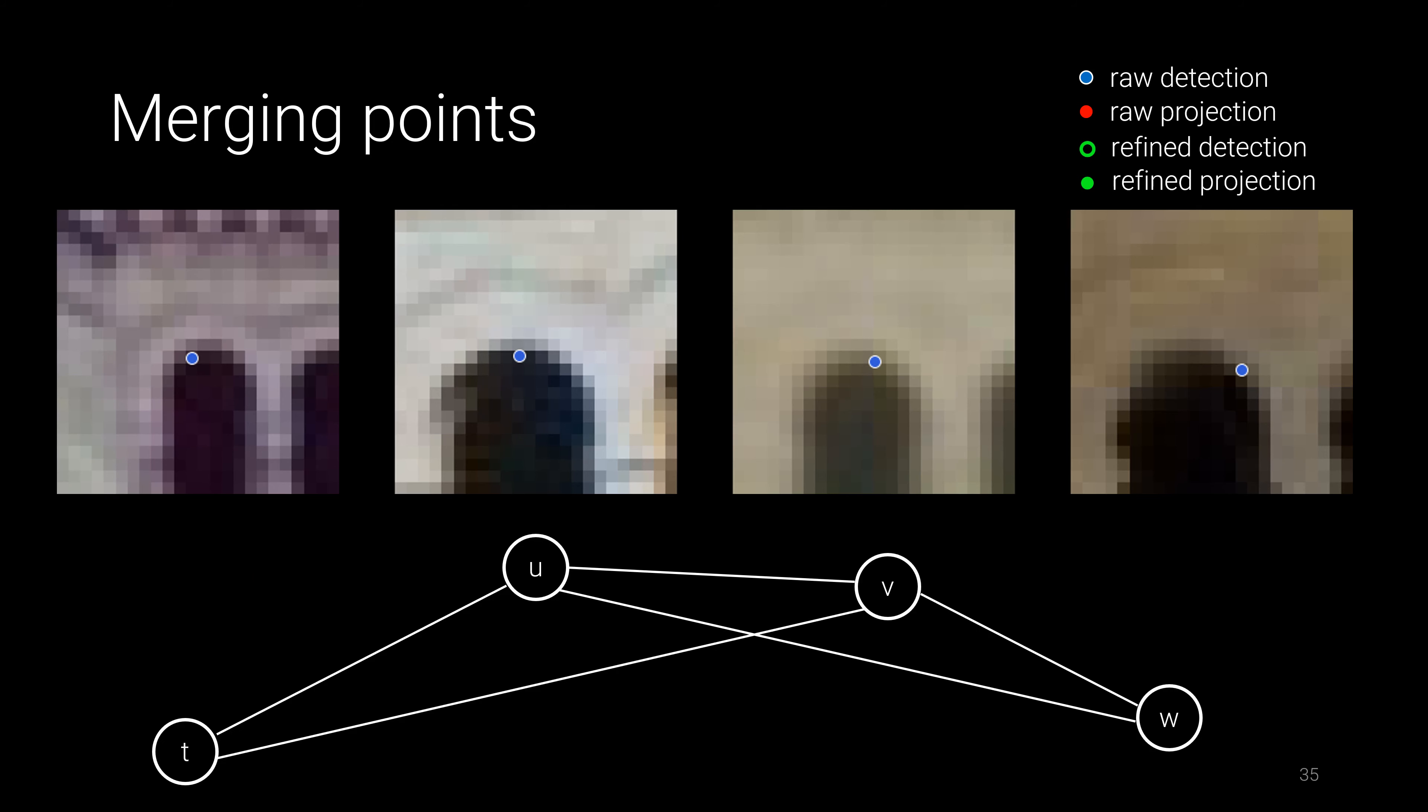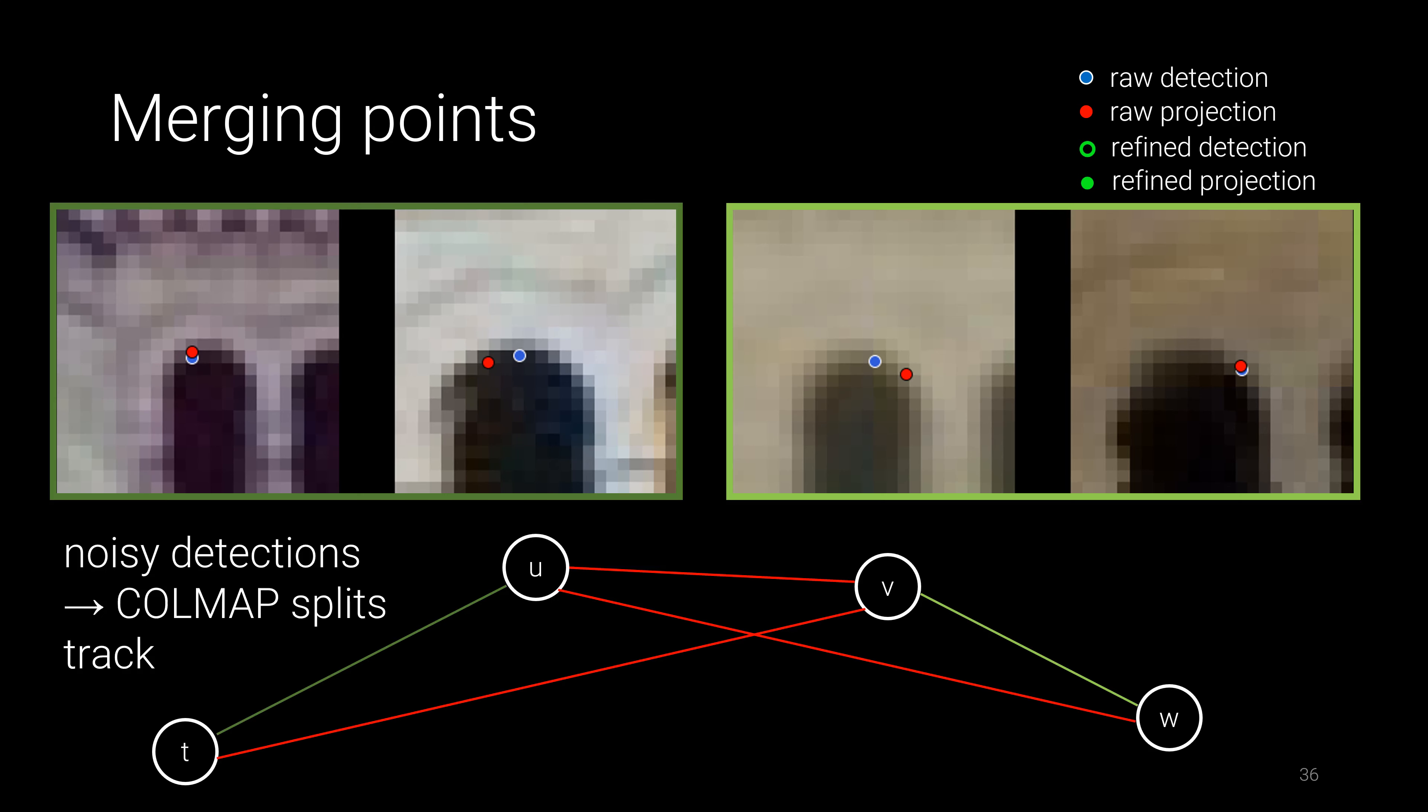Here, we have a track where all four features are matched together. But because of noisy keypoints, COLMAP fails to merge points during triangulation and instead creates two separate, smaller tracks with large reprojection error.